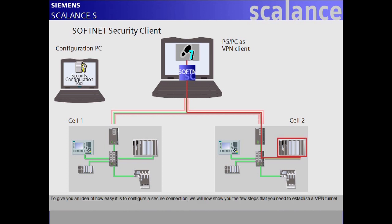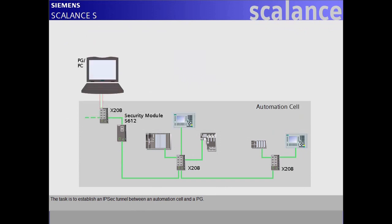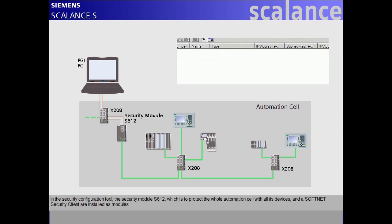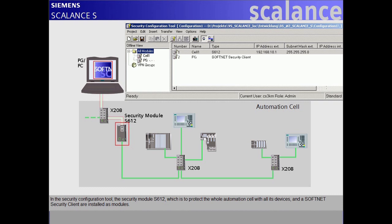To give you an idea of how easy it is to configure a secure connection, we will now show you the few steps needed to establish a VPN tunnel. The task is to establish an IPsec tunnel between an automation cell and a PG. In the Security Configuration Tool, the security module S612 — which is to protect the whole automation cell with all its devices — and a SoftNet Security Client are installed as modules.